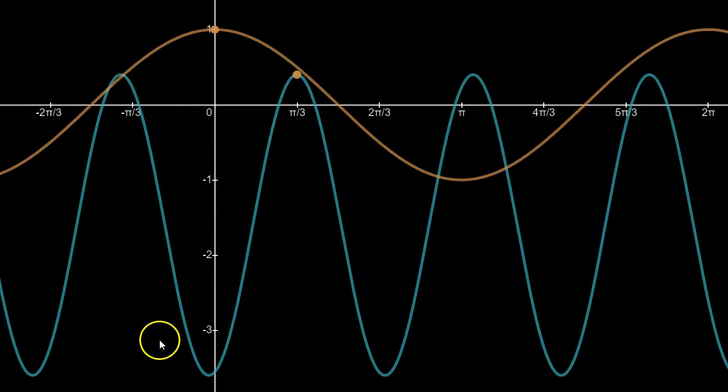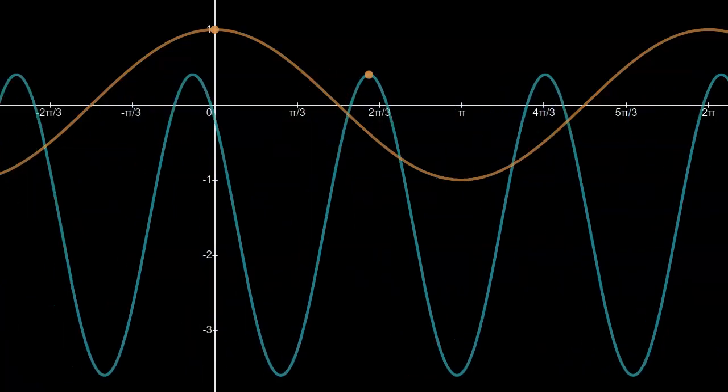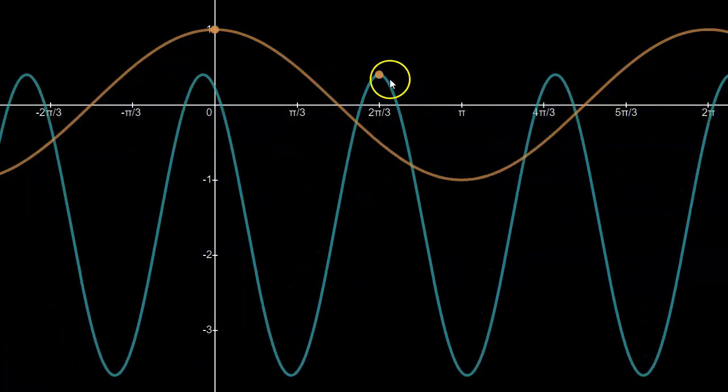Now if I were to move a little farther to the right, then I could still use 2 pi over 3 as my c value, but now there's actually a closer maximum to the y-axis, but it's shifted off of the y-axis to the left.